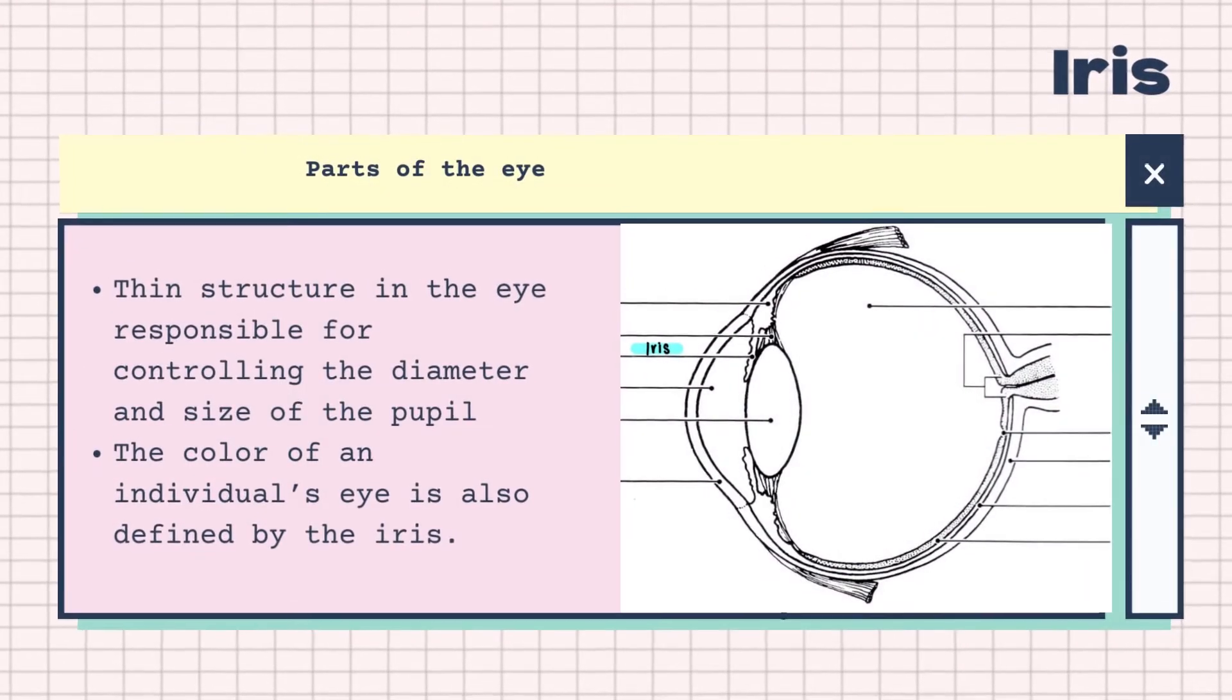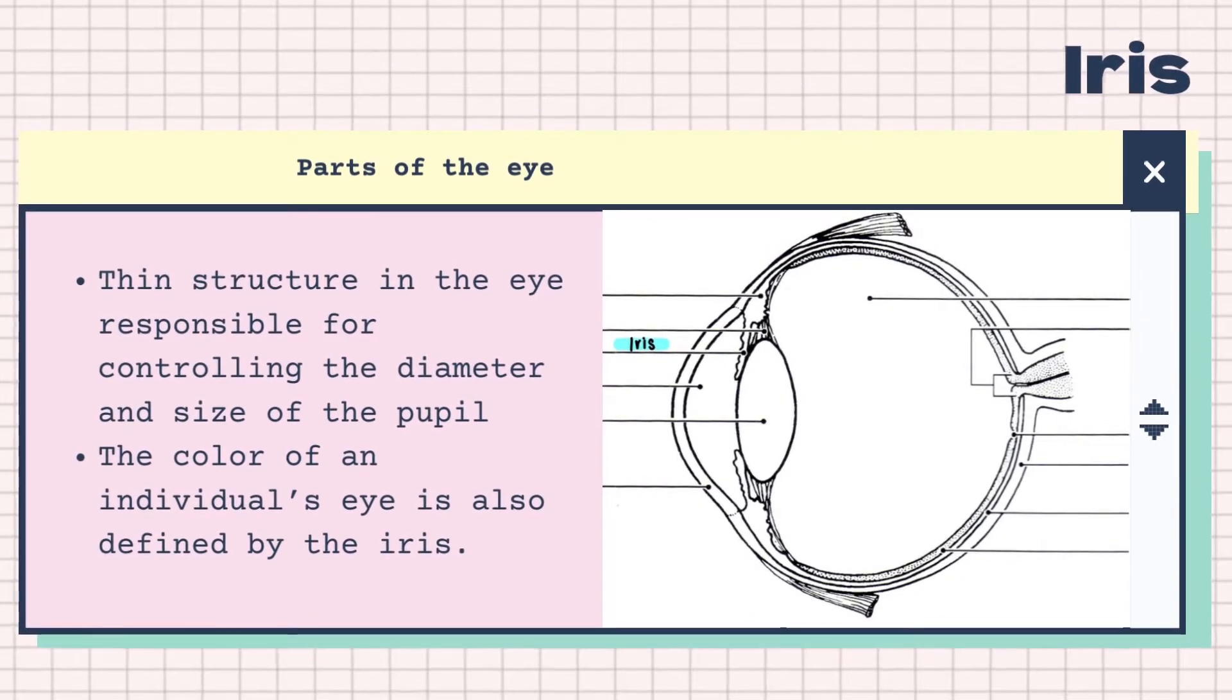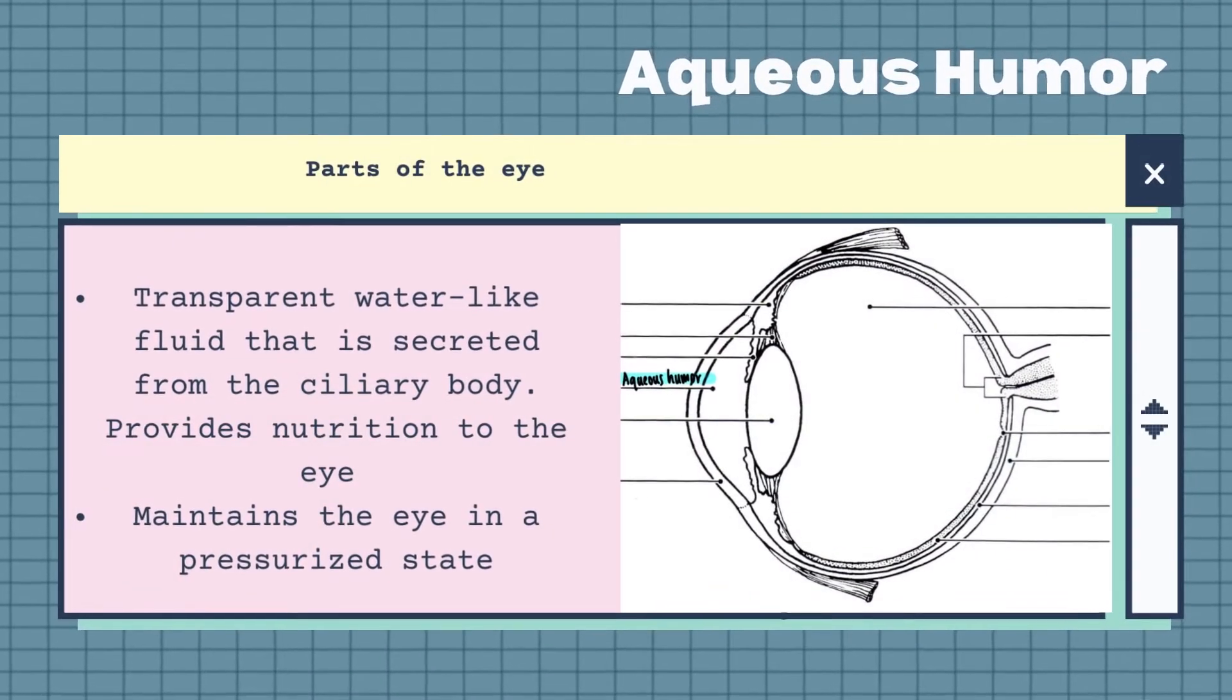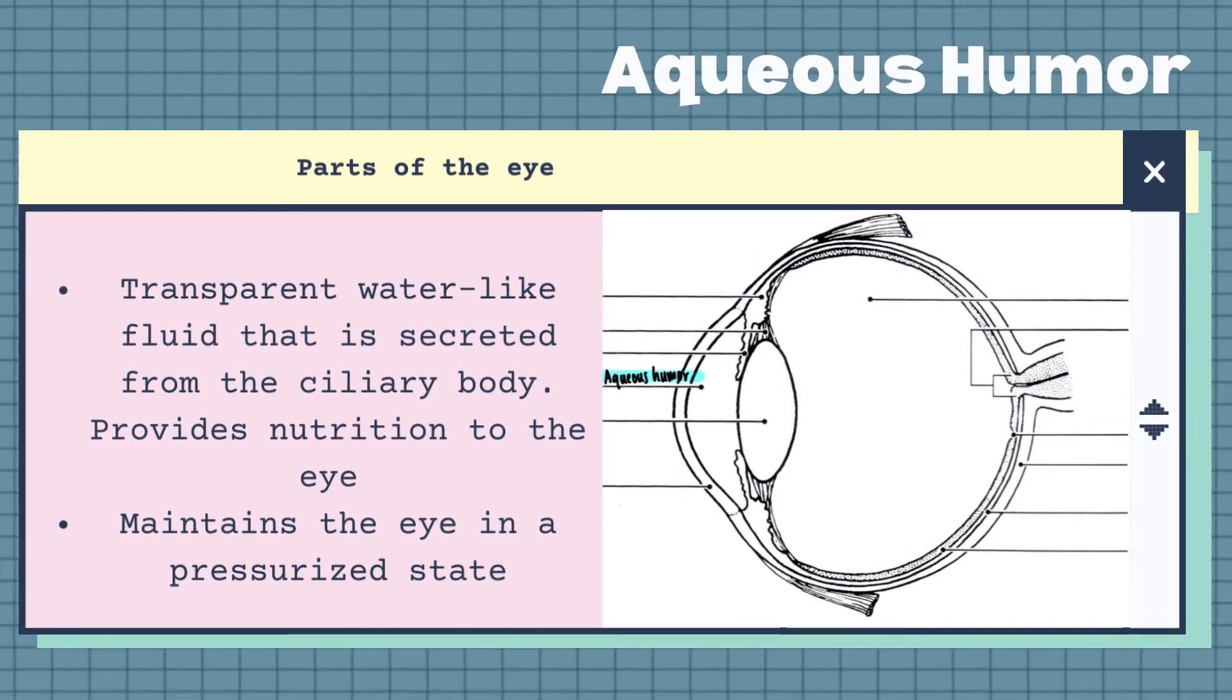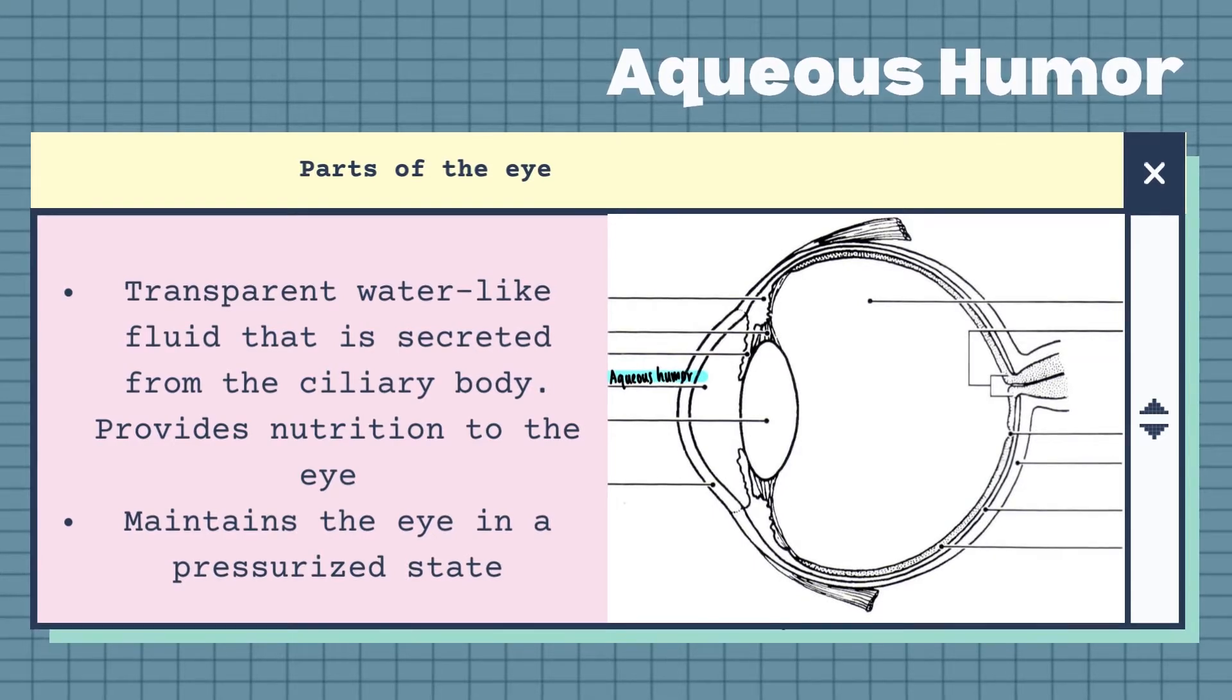The iris is a thin structure in the eye that is responsible for controlling the diameter and size of the pupil. The color of an individual's eye is also defined by the iris. The aqueous humor is a transparent water-like fluid that is secreted from the ciliary body. It provides nutrition to the eye as well as maintains the eye in a pressurized state.